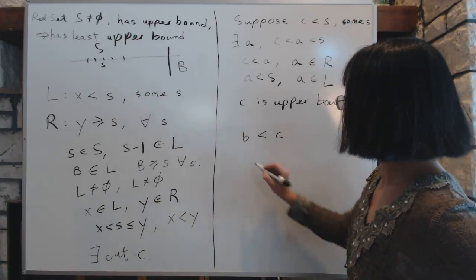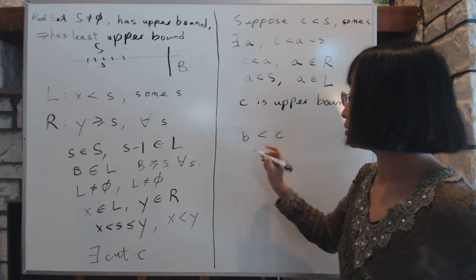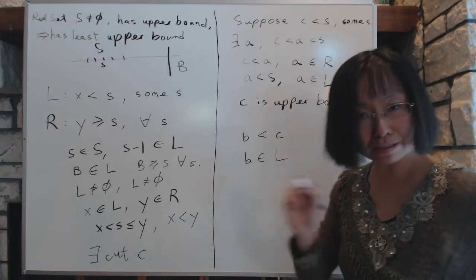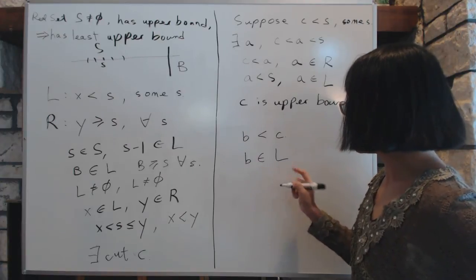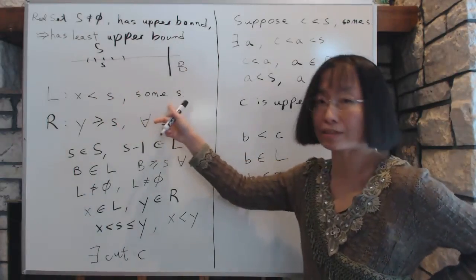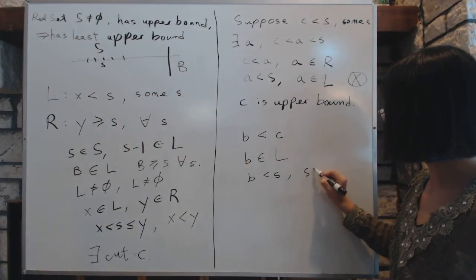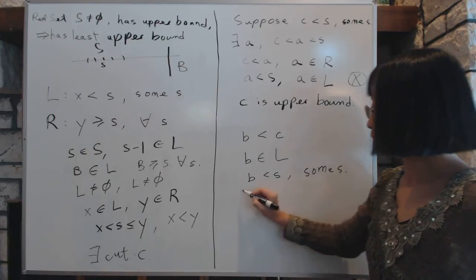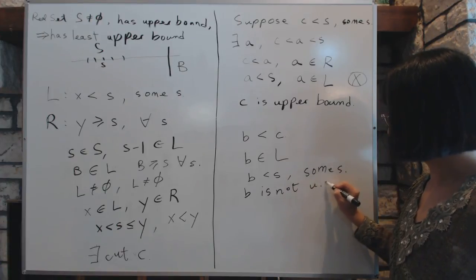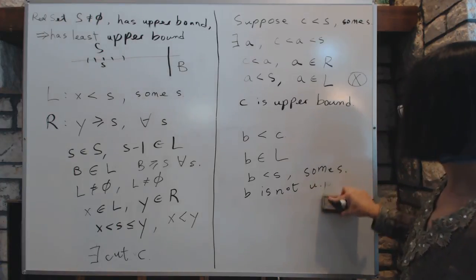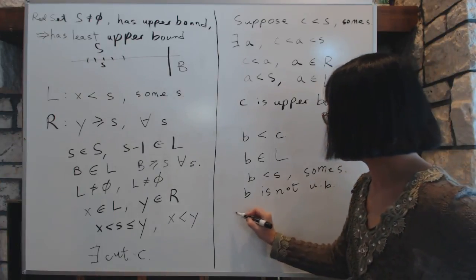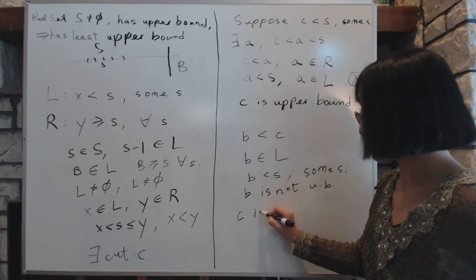Can b be the upper bound? By definition of the cut, any number less than the cut has to be on the left side — in set L. If b is in set L, then b is less than s for some s, because that's the definition of set L. So b is less than s for some s, and therefore b is not the upper bound. This shows that c is therefore the least upper bound, and that concludes the proof.